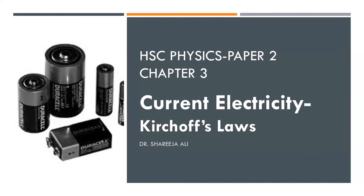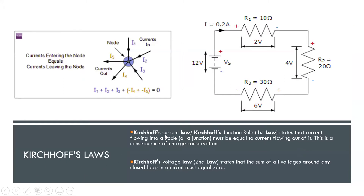There are two laws in Kirchhoff's laws: the current law and the voltage law. The current law states that the current flowing into a node or a junction is equal to the current flowing out of it. This is the consequence of charge conservation.